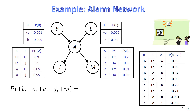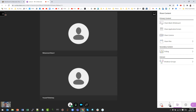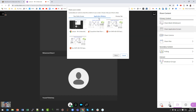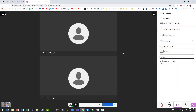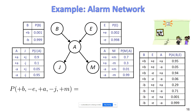We will have another example today and then insha'Allah we'll talk about inference. Let's start with this example. We have a BayesNet of five variables — the classical one that has burglary, earthquake, alarm, John and Mary calling. Now you can see the slides.